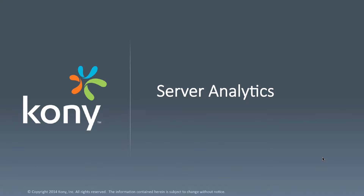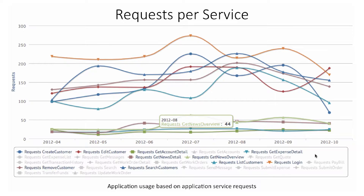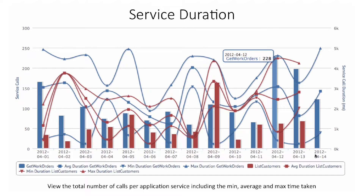From a server-side perspective, we gather data on service requests from each application request to the server. This data is tracked on a timeline and can be aggregated by day, week, or month. The service duration report lets you view the total number of calls for an application service, including the minimum, maximum, and average time taken. The data can also be aggregated by hour to further drill down and see changes in response times at peak traffic.